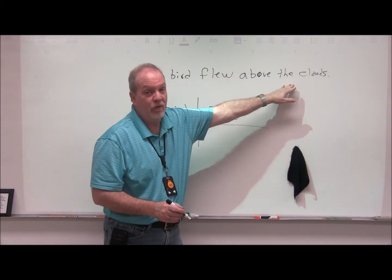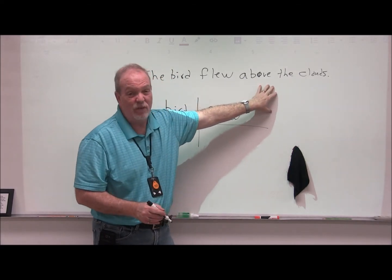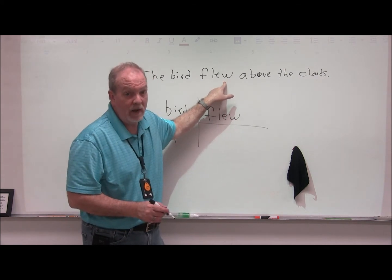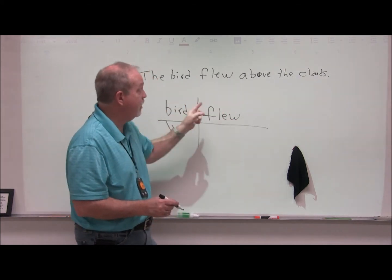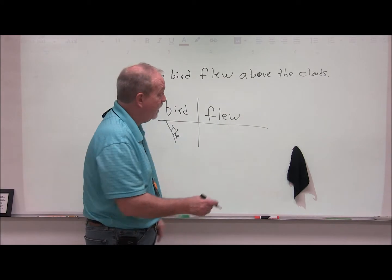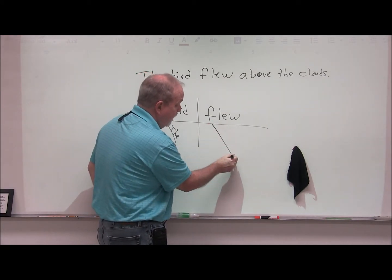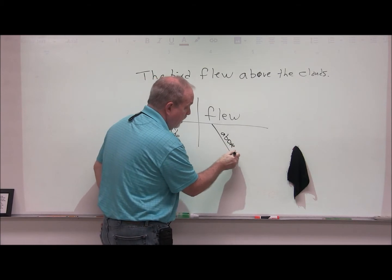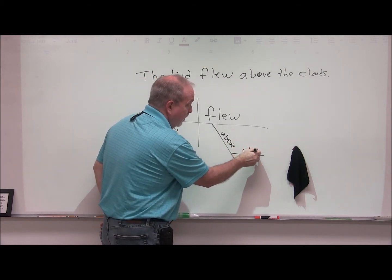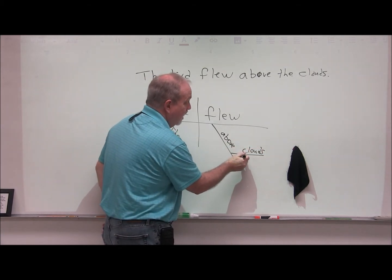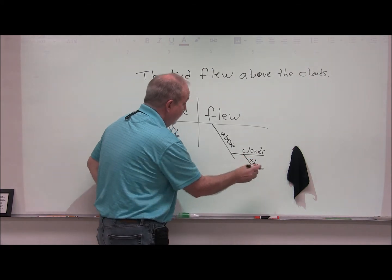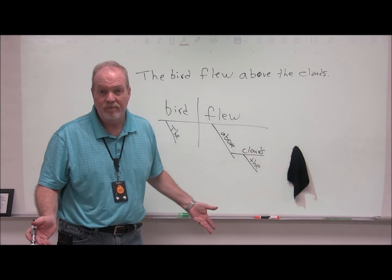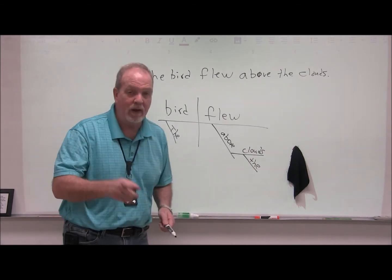Here's your prepositional phrase. And in this case, it's functioning as an adverb because it tells you where the action took place. So where did the bird fly? Above the clouds. That's a prepositional phrase. Above is your preposition. Clouds is the object of the preposition. What kind of clouds? The clouds. I have used every word in the sentence. That's how you do it. It's really pretty simple. Okay.